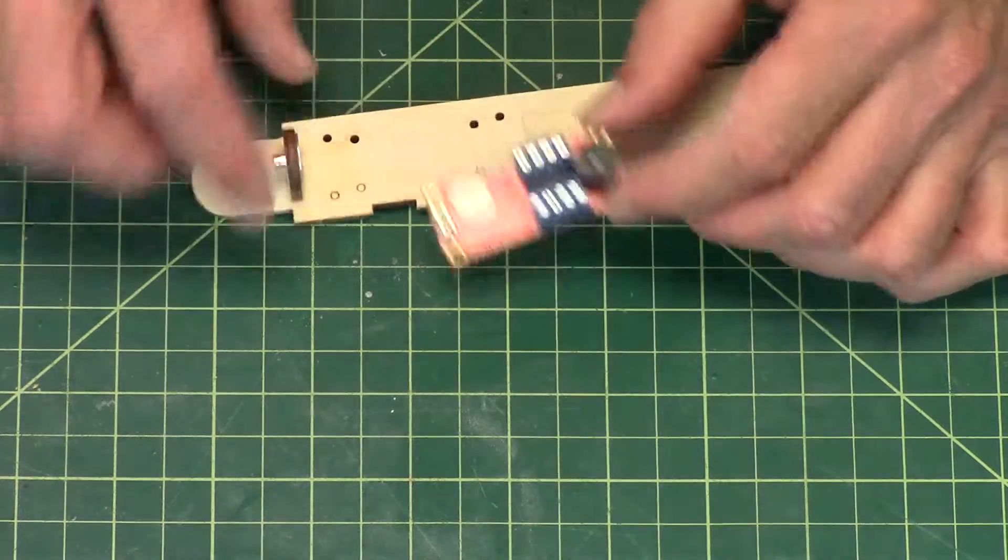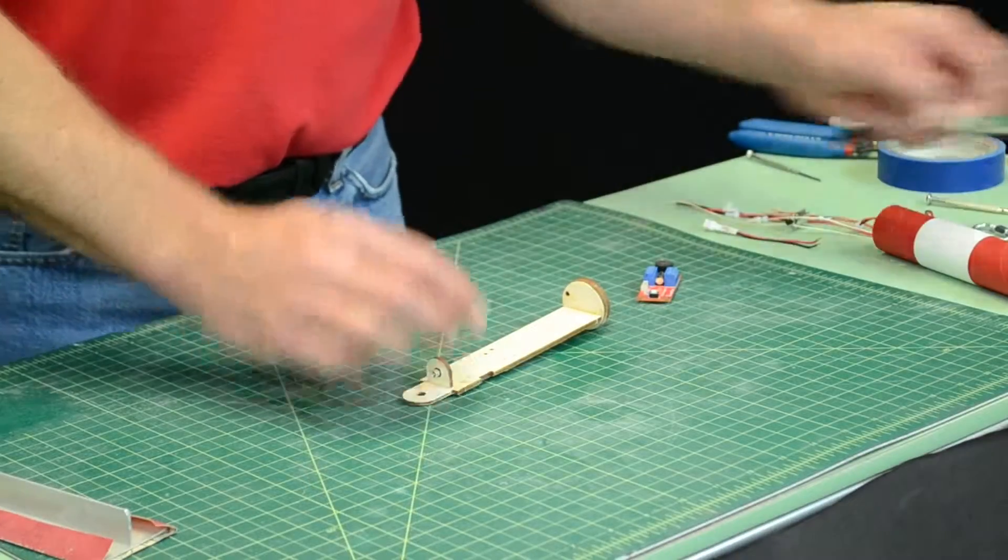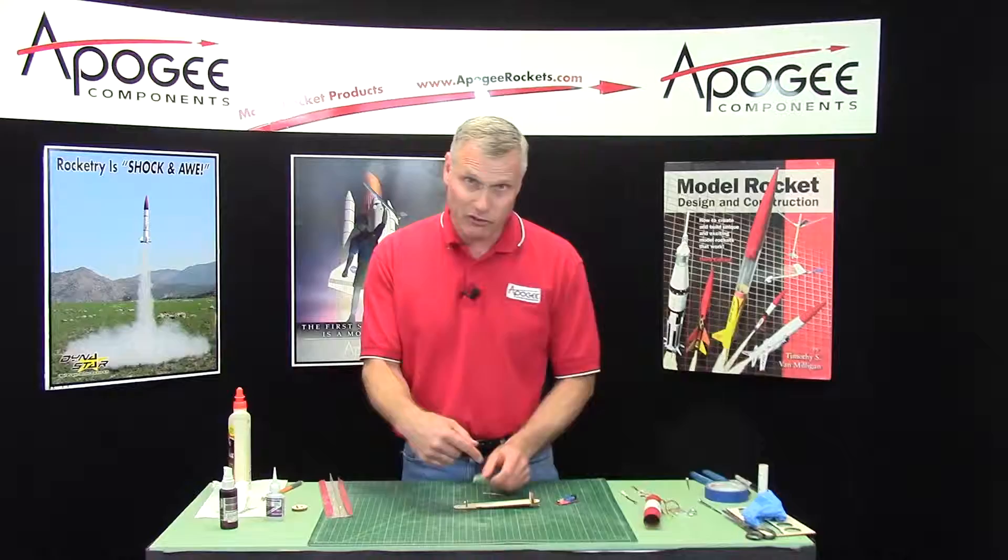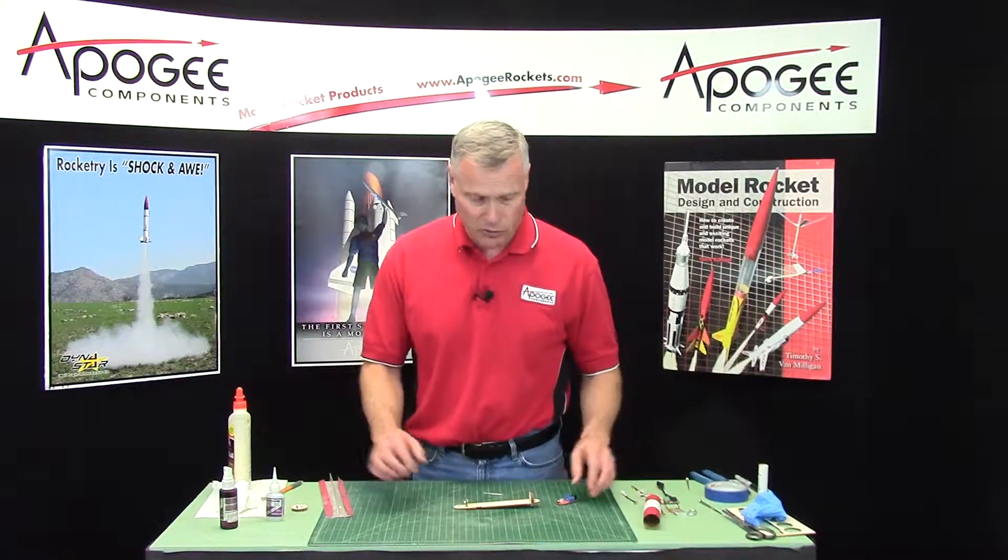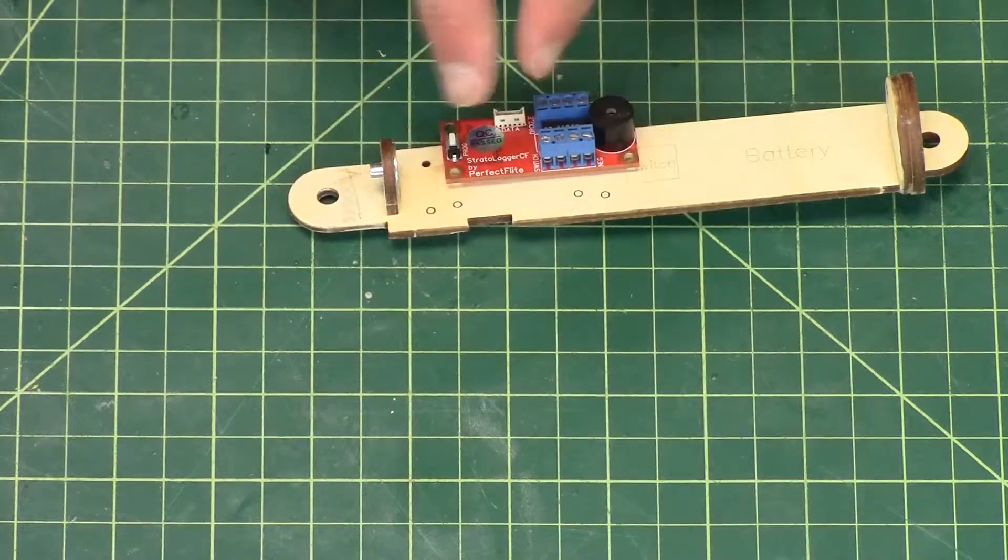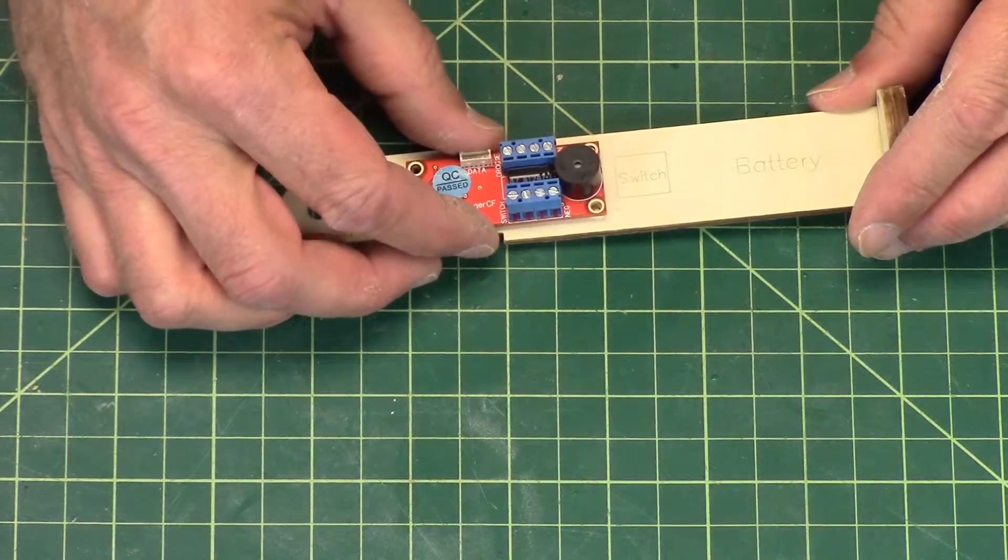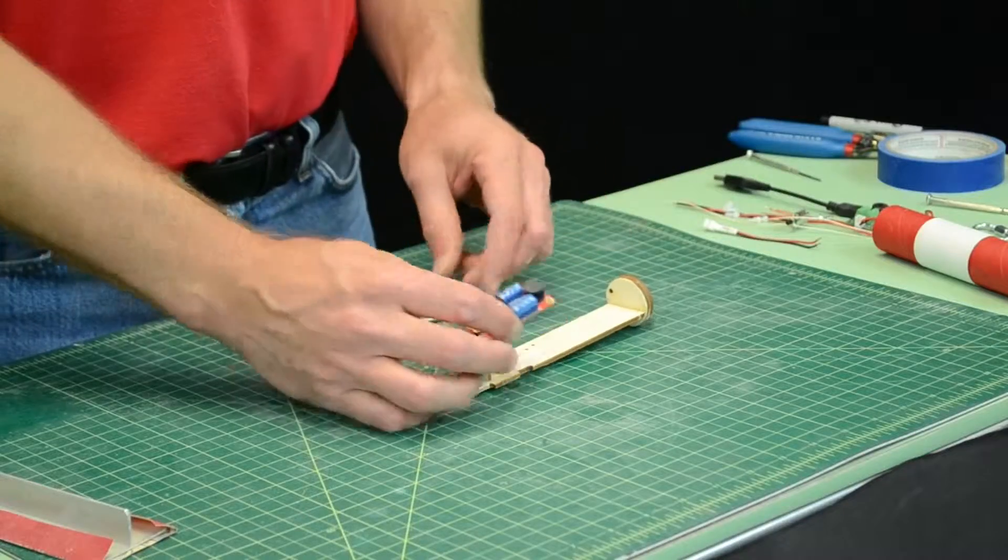If you're using the PerfectFlight Stratologger CF, it's the outside holes. And if it's the Easy Mini, it will be the inside holes. And if you have a different altimeter that's different hole position but that will still fit on the board in that location, you may need to drill your own holes.